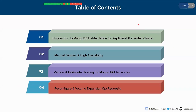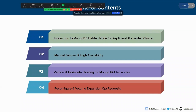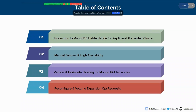These are the contents of this webinar. I will firstly introduce you to MongoDB hidden node for replica set and sharded cluster. Then I will give some manual failover test cases to test the high availability of the MongoDB replica set and sharded cluster. Then I will show you vertical scaling and horizontal scaling of OpsRequests, and then reconfigure and volume expansion of OpsRequests to work with MongoDB hidden node.